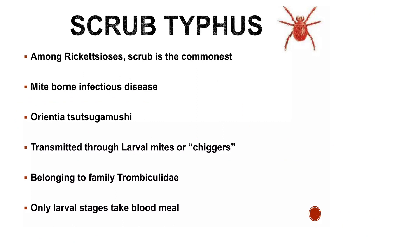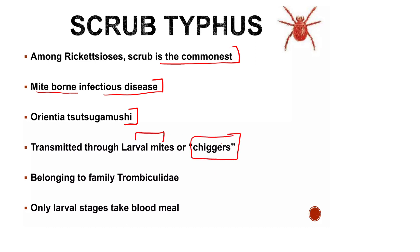Among rickettsioses, scrub typhus is the commonest. It is a mite-borne infectious disease where the larval stage causes infection. The causative agent is Orientia tsutsugamushi, and the infected larval mite that transfers it is known as chiggers — belonging to the family Trombiculidae. Only the larval stage takes a blood meal from humans and is capable of causing infection.